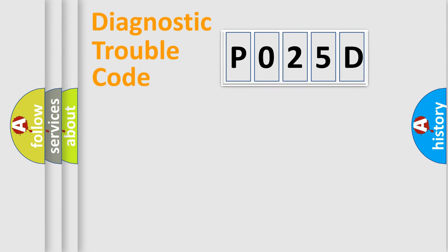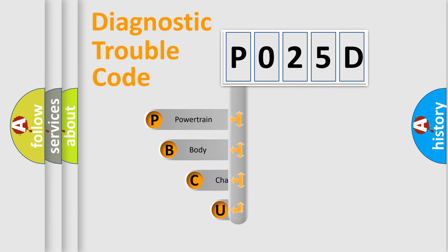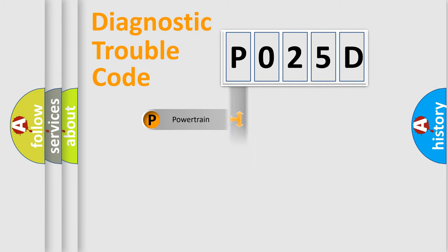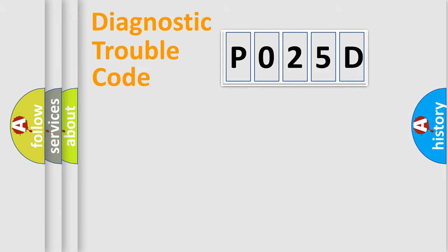Let's do this. First, let's look at the history of diagnostic fault code composition according to the OBD2 protocol, which is unified for all automakers since 2000. We divide the electric system of an automobile into four basic units: Powertrain, Body, Chassis, and Network.